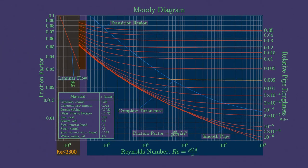Now, knowing the relative roughness and Reynolds number, we get the friction factor for turbulent flow.